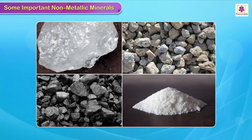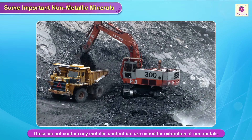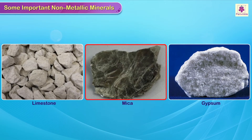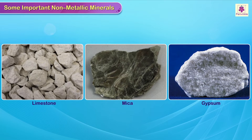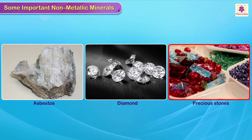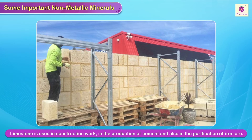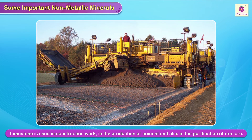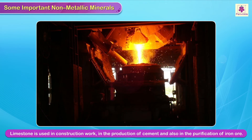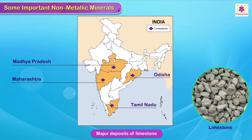Some important non-metallic minerals: these do not contain any metallic content but are mined for extraction of non-metals. Limestone, mica and gypsum are the commonly used non-metallic minerals. Asbestos, diamond and various precious stones are other minerals found in different parts of the country. Limestone is used in construction work, in the production of cement, and also in the purification of iron ore. India has limestone deposits in Madhya Pradesh, Maharashtra, Tamil Nadu, Odisha and Karnataka.